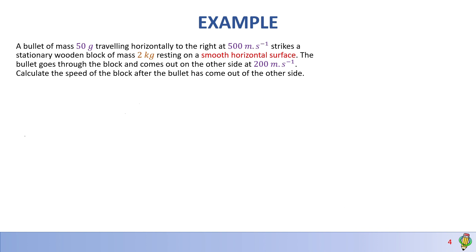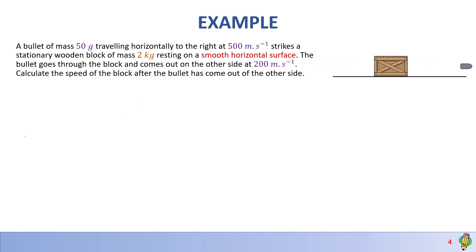Now let's look at an example. A bullet of mass 50 grams traveling horizontally to the right at 500 m/s strikes a stationary wooden block of mass 2 kg resting on a smooth horizontal surface. The bullet goes through the block and comes out the other side at 200 m/s. Calculate the speed of the block after the bullet has come out. The block will want to move in the direction of the bullet, but we can always prove our guesses using physics.